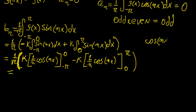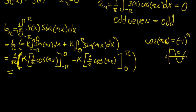We take advantage of the identity cos(nπ) = (−1)ⁿ, which we introduced in the last video. This tells us that all integer multiples of pi give either minus one or one — at n=1 we have cosine(π) = −1, at n=2 we have cosine(2π) = +1, and so on. So we can express cosine(nπ) = (−1)ⁿ.